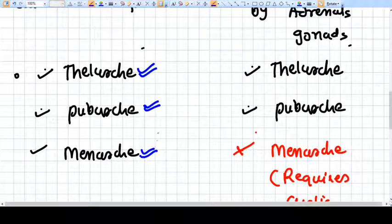Thelarche means development of breast, pubarche means development of adrenal androgenic hair, and menarche means onset of menstruation.